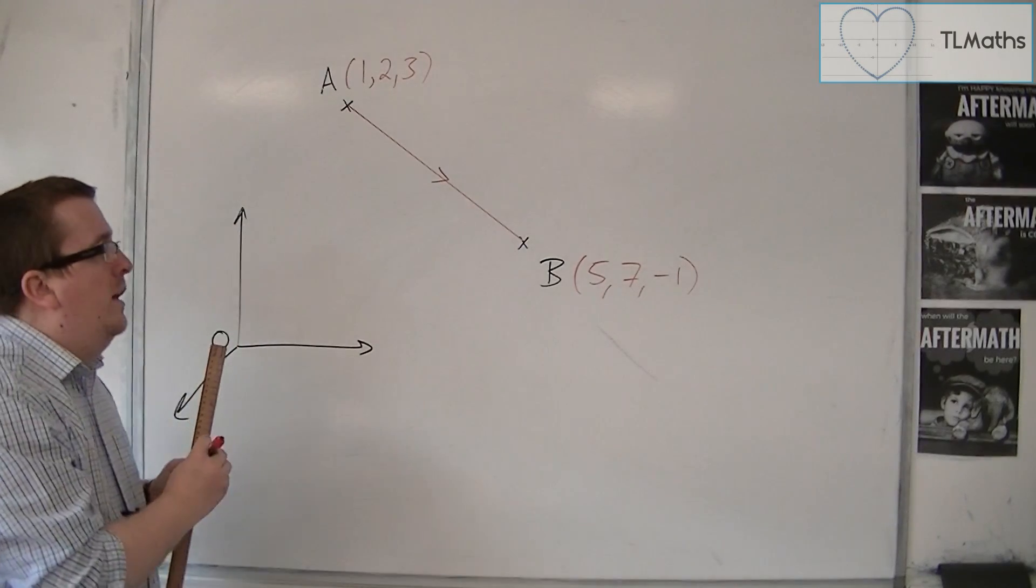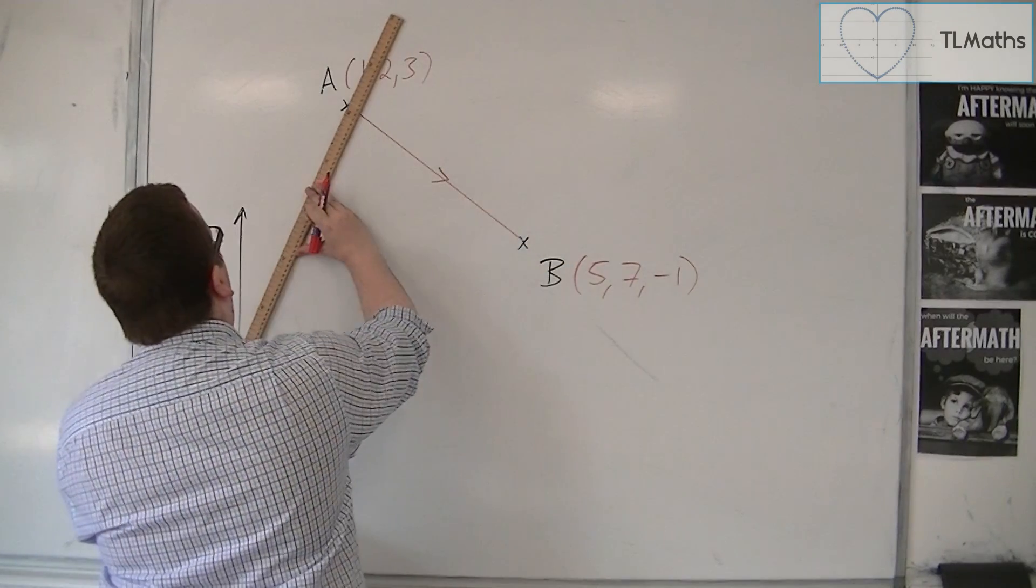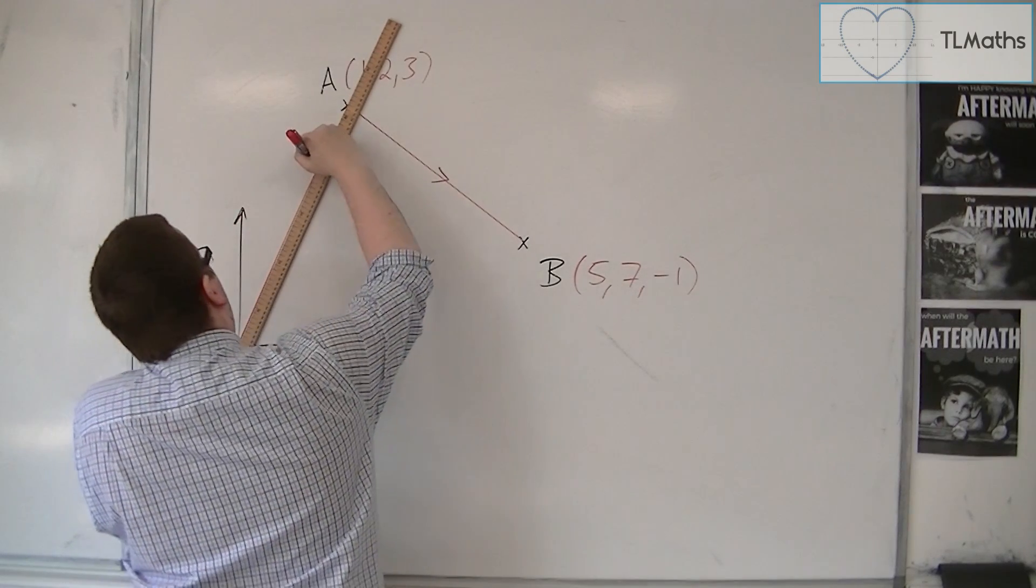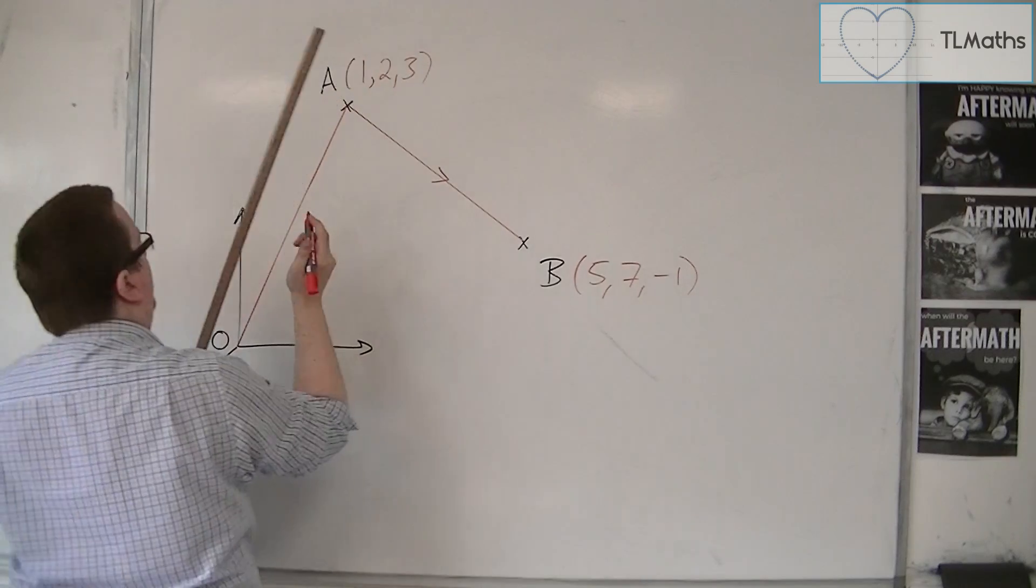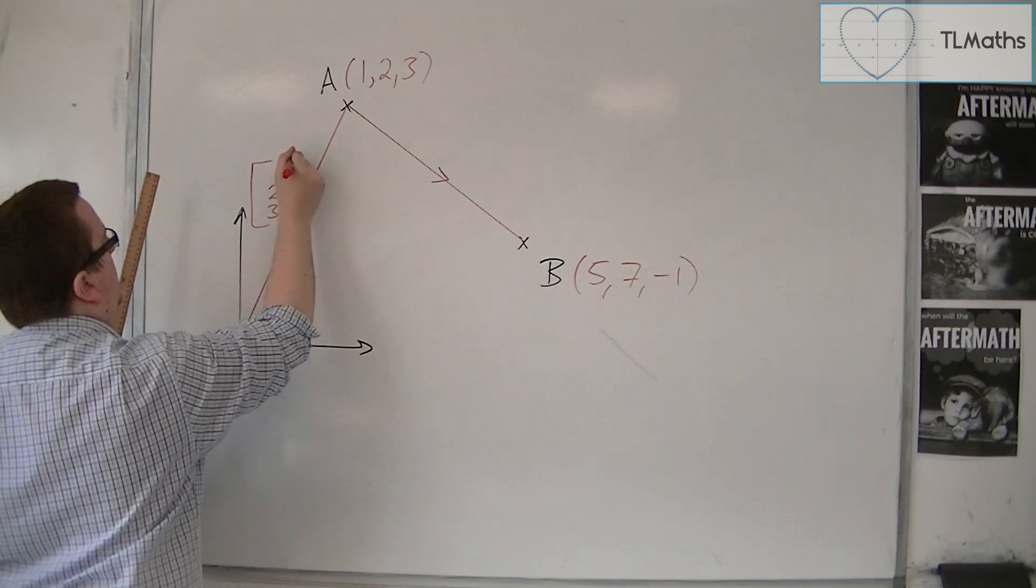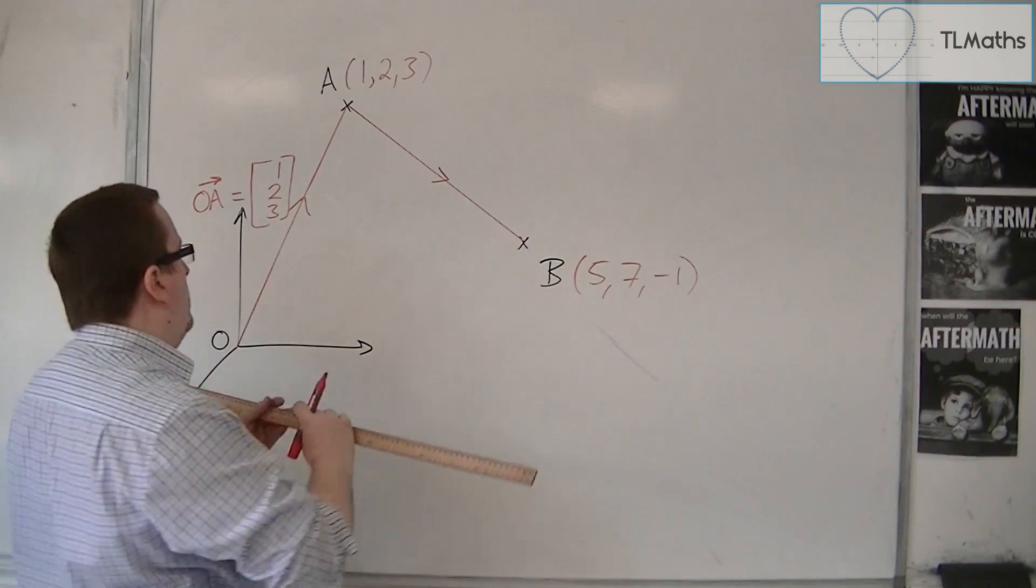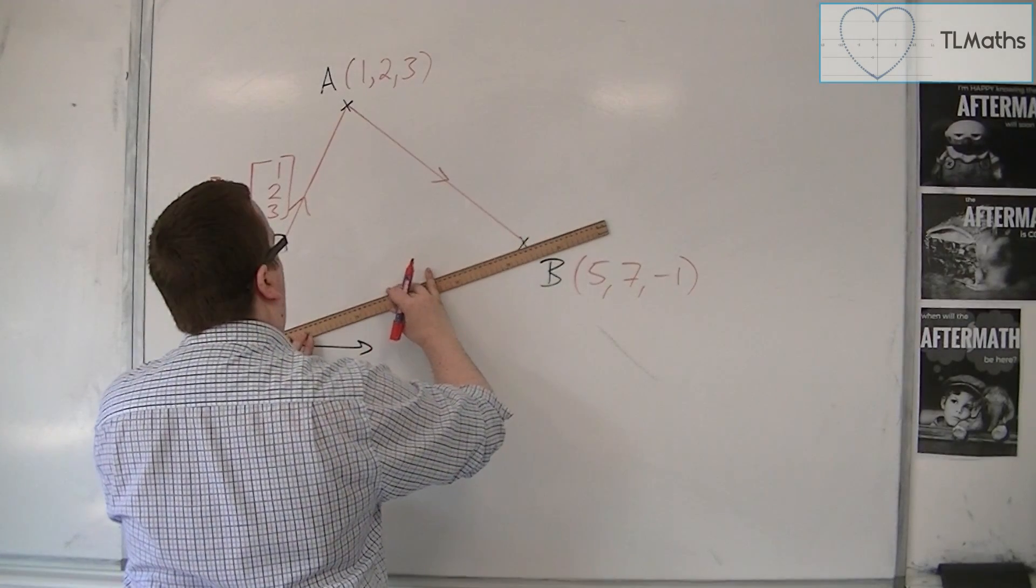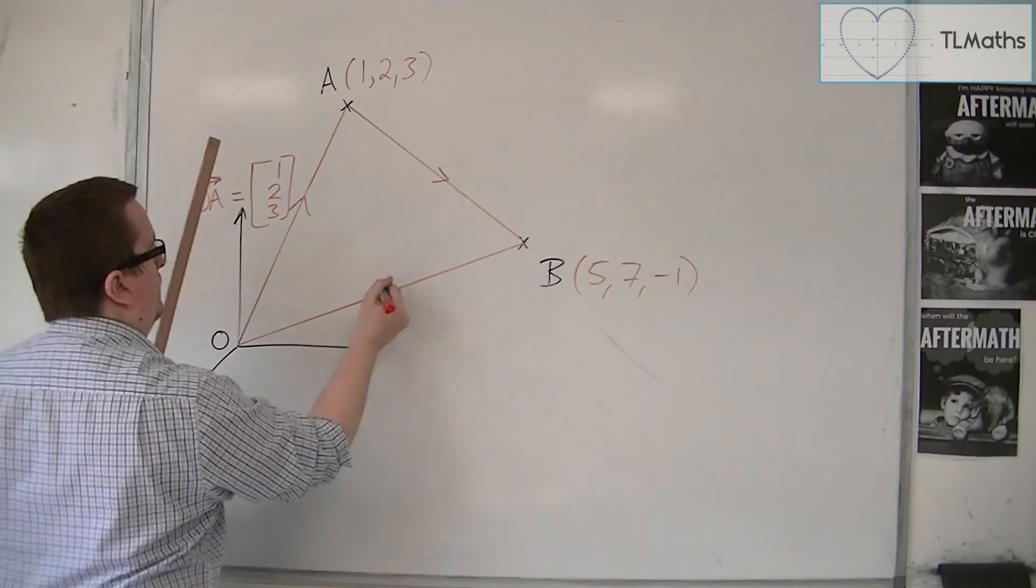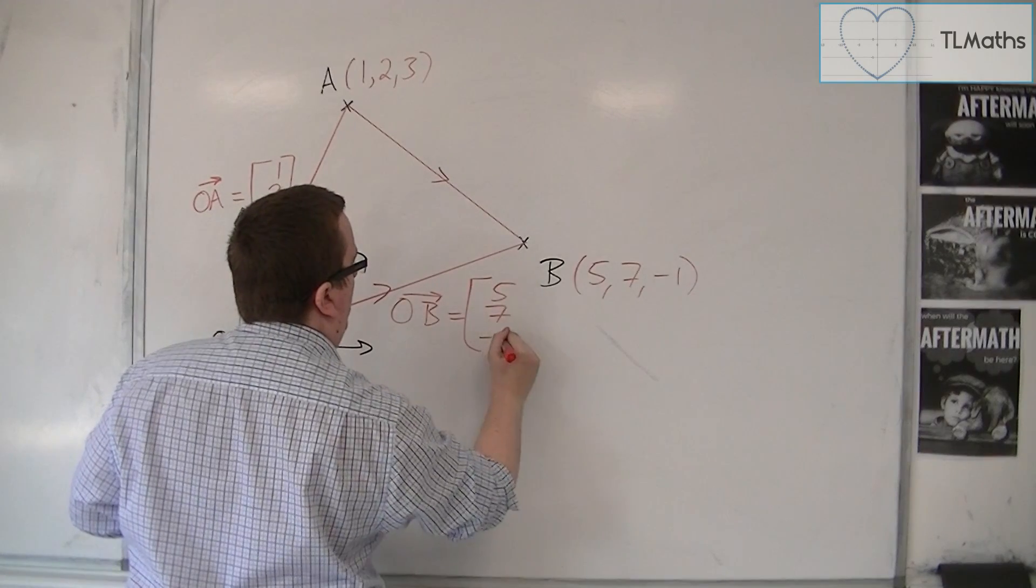Then what I do know is I know the position vector that will get me from O to A and from O to B. Okay, so from O to A, the position vector is equal to 1, 2, 3. So that's OA. And I can also write down the position vector that gets me from O to B. So O to B is equal to 5, 7, minus 1.